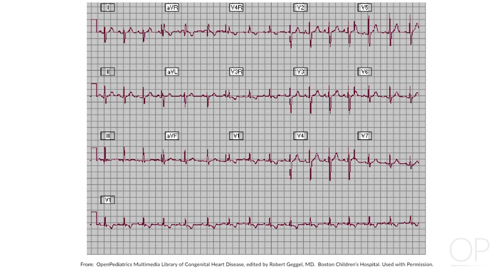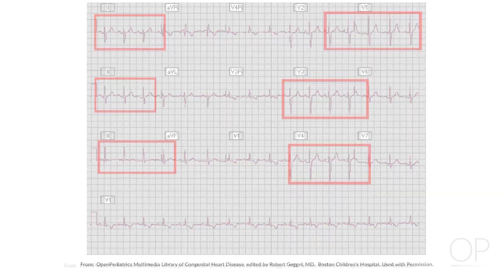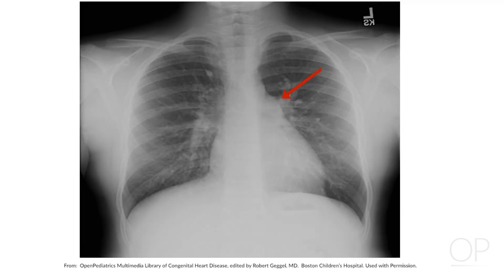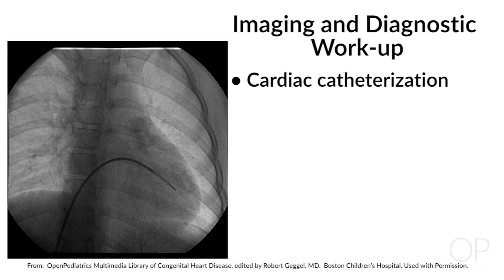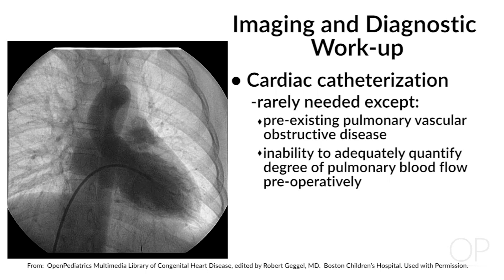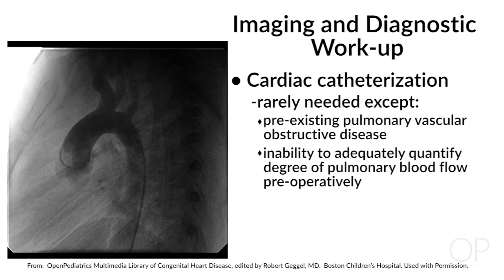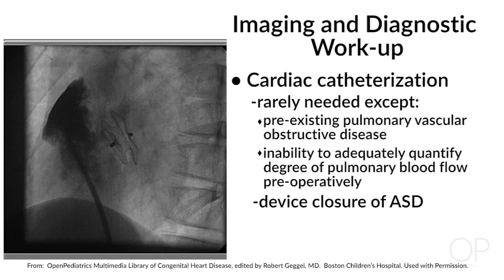EKG findings are usually significant for right axis deviation of positive 90 to positive 180 degrees, right ventricular hypertrophy, and/or right heart enlargement. The chest x-ray also shows right heart enlargement, perhaps a prominent main pulmonary artery, and cephalization or increased pulmonary blood flow if the ASD has been long-standing and is large. MRI can be helpful if key neighboring structures cannot be clearly seen by echo. Cath is rarely needed except when pulmonary vascular obstructive disease has developed, or when the degree of pulmonary blood flow cannot be adequately quantified preoperatively.